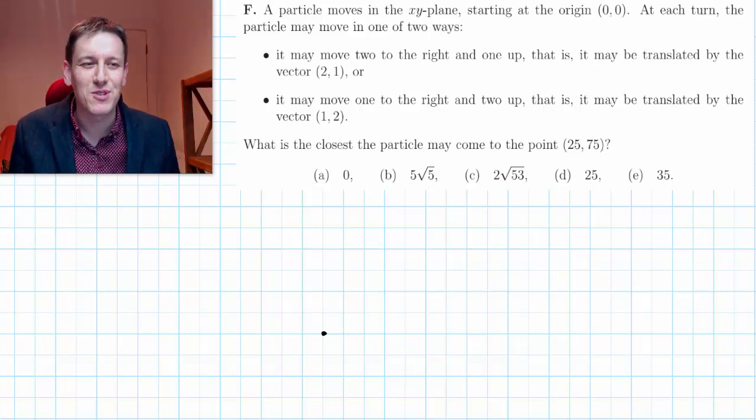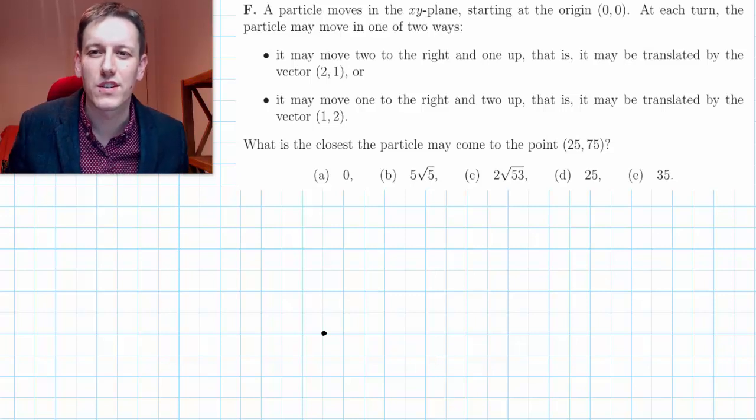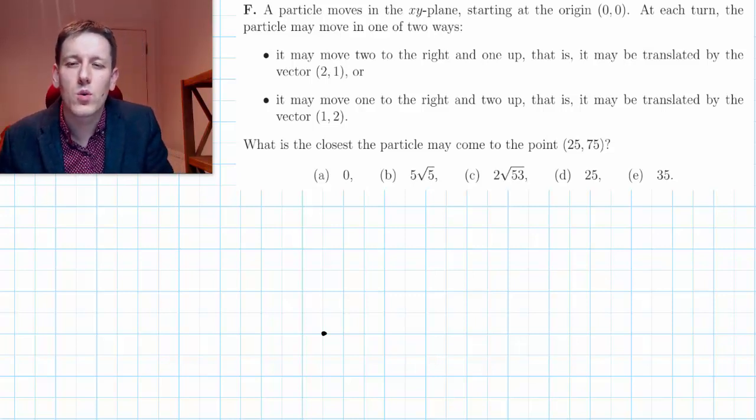Hi, this is question F from the short answer questions for the math admissions test for Oxford for 2018. We've got a particle moving in the xy plane, it starts at the origin.